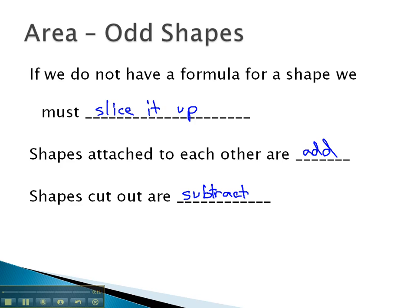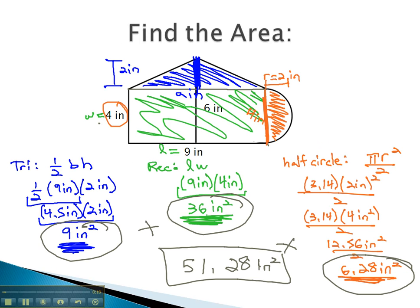We did an example where shapes were attached to each other. We had a triangle, a half circle, and a rectangle that were attached to each other, and we found those individual areas and then added them together.